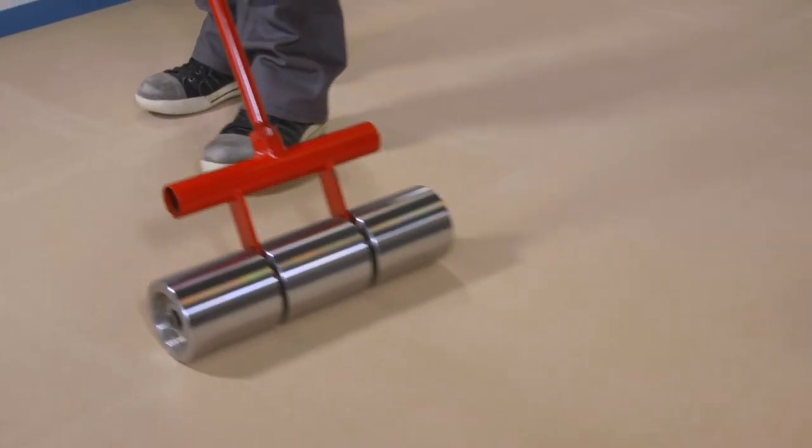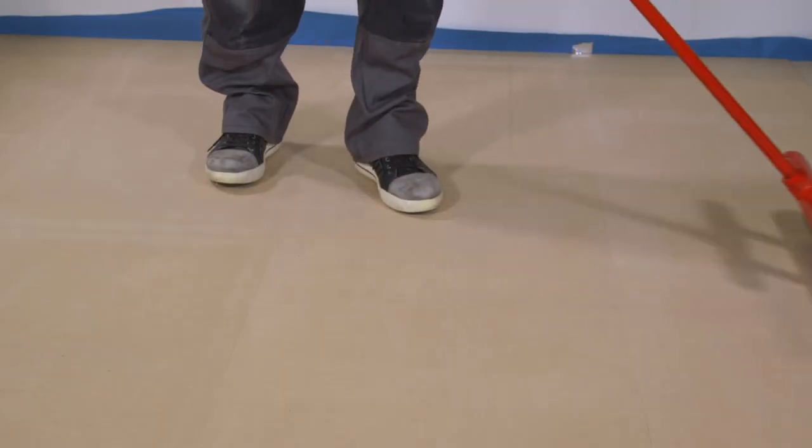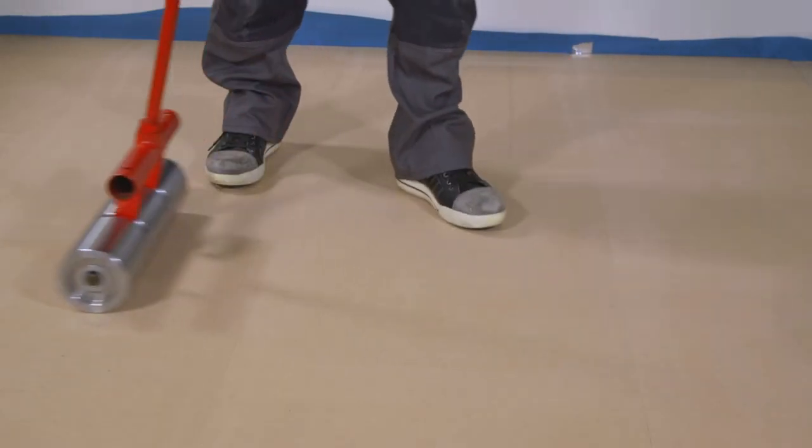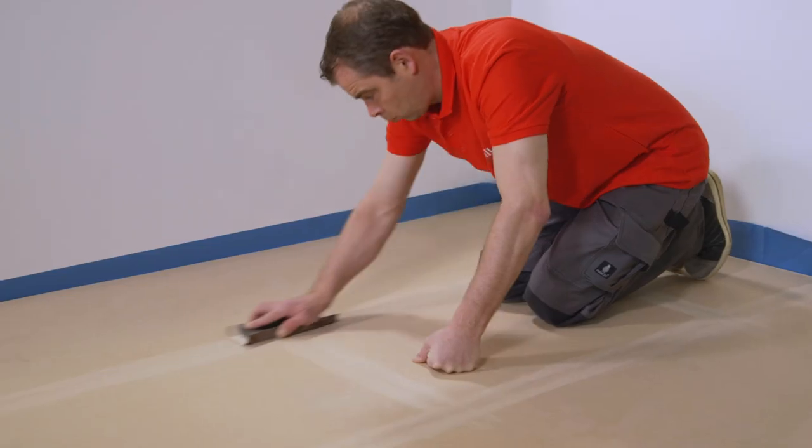Glide over the installed FloorFixSmart underlay using a 50 kilogram or 100 pound heavy roller. Sand the seams to create a perfectly smooth even floor.